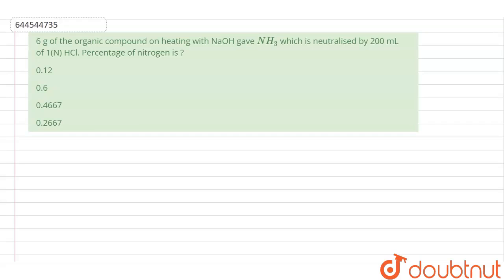Hello friends, the question asked here is 6 grams of an organic compound on heating with NaOH gave NH3 which is neutralized by 200 ml of one normal HCl. Percentage of the nitrogen in that organic compound will be what, okay.